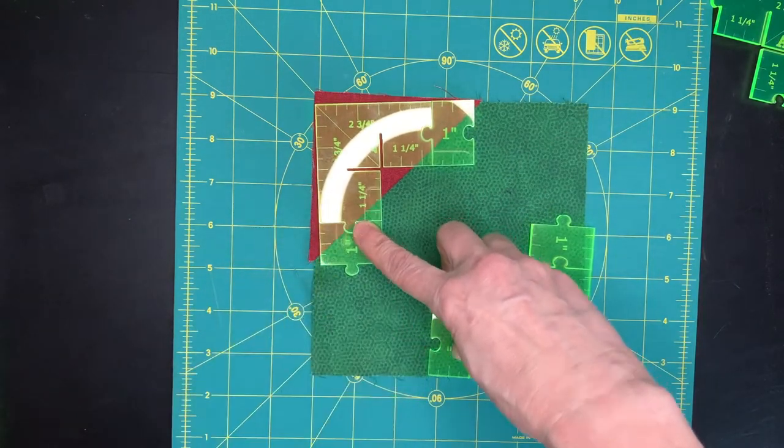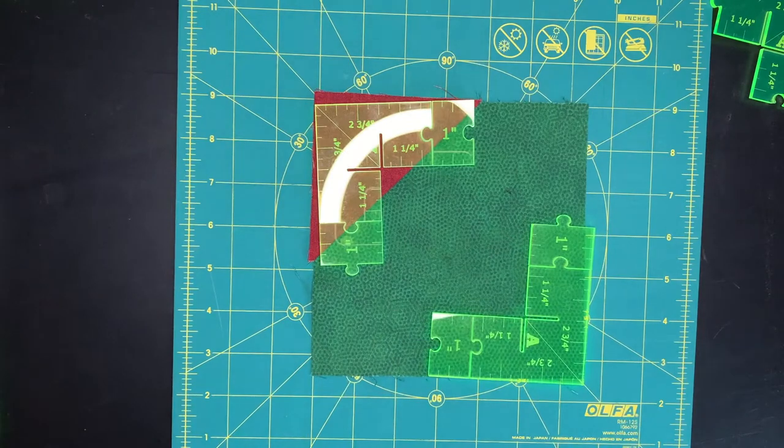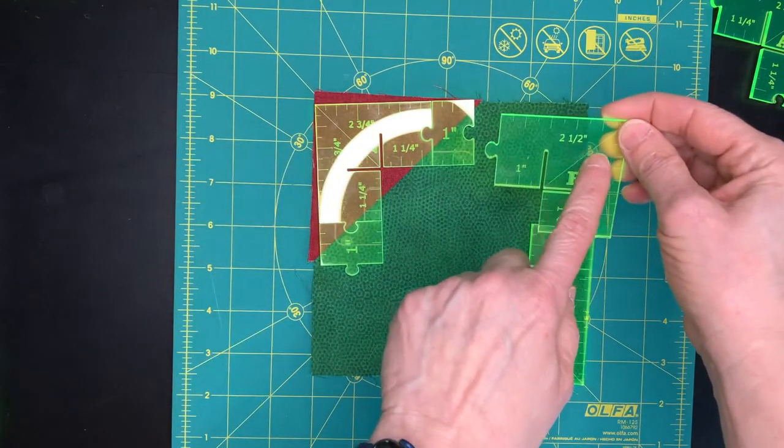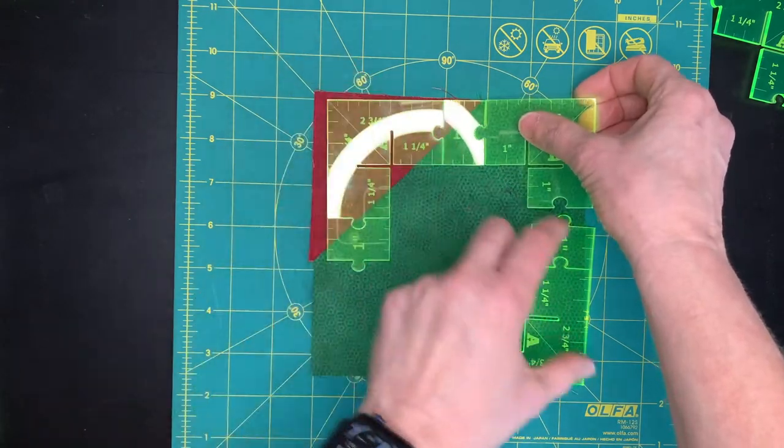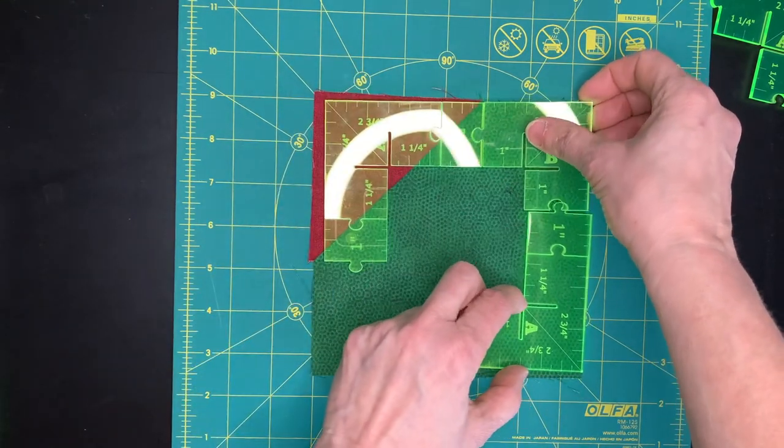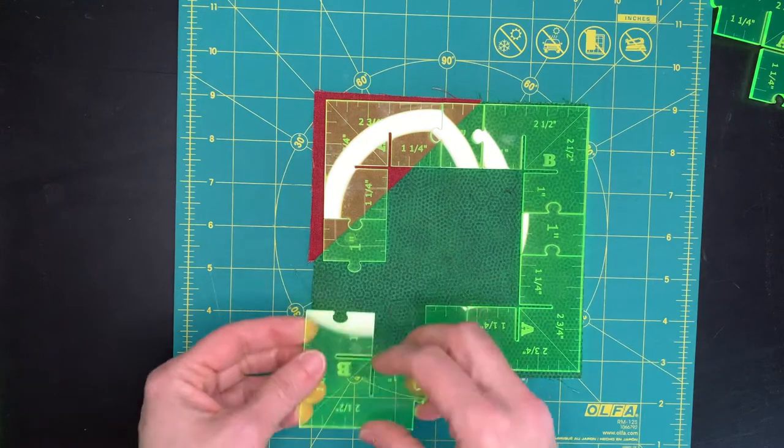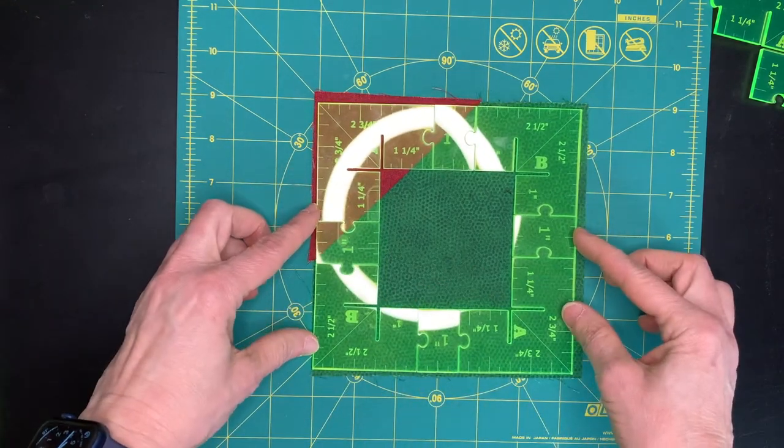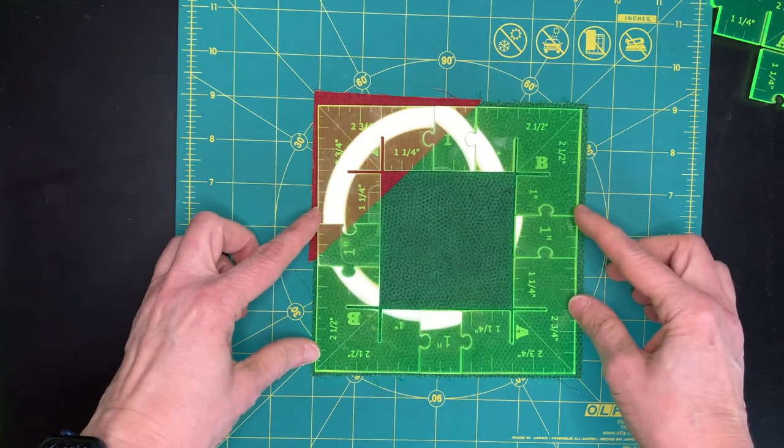And we put in two B corners. The B corners are two and a half inches on the outside instead of two and three quarter inches like the A pieces. See, so now I have six and a quarter by six and a quarter.